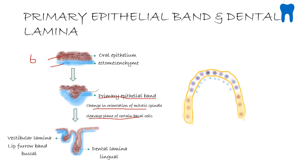This horseshoe-shaped thickening is seen to invade the underlying ecto-mesenchyme. A week later, by around the 7th week, the primary epithelial band will further divide into a vestibular lamina and a dental lamina. The vestibular lamina, otherwise called the lip furrow band, is on the buccal aspect, and the dental lamina is on the lingual aspect.